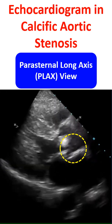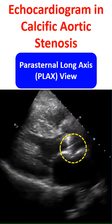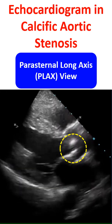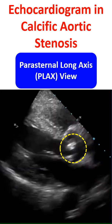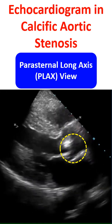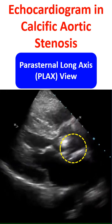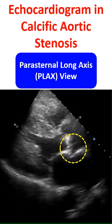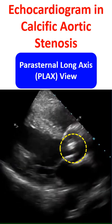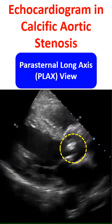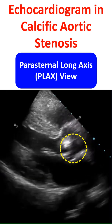Echocardiogram in parasternal long axis view showing calcific aortic valve which domes in systole with restricted opening. The aortic orifice is quite narrow. Normally, valve leaflets will almost be invisible in systole as they will get opposed to the walls of the aortic sinuses of Valsalva.